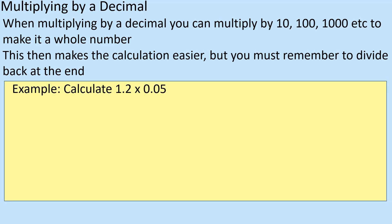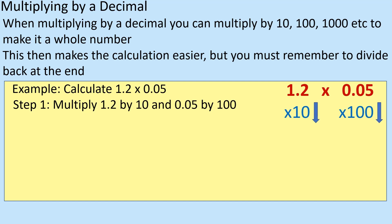So if I do 1.2 times 0.05, what I can do is manipulate the 1.2 and the 0.05 by multiplying 1.2 by 10 and the 0.05 by 100. So if I do that, I'm going to have 12 times 5.